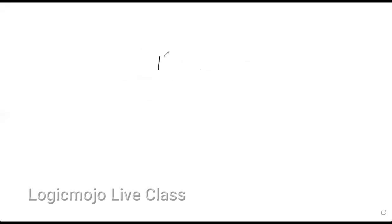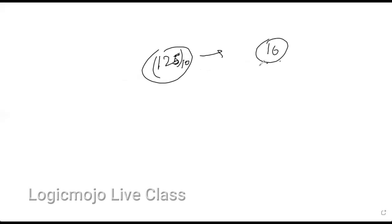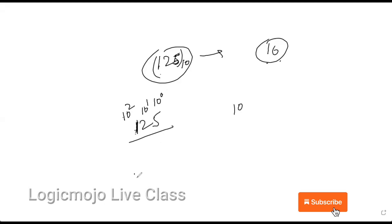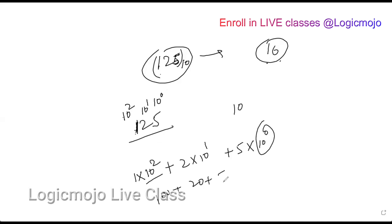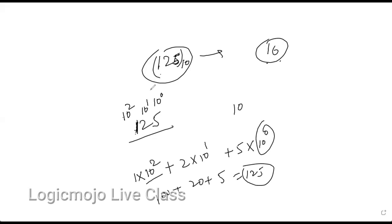There is one more thing: base conversion. If a number is 125 in base 10 and you need to convert it to another base like hexadecimal, here's how. In decimal (base 10), each digit position represents a power of 10: so 125 is 1×10² + 2×10¹ + 5×10⁰ = 100 + 20 + 5. Our default mindset assumes base 10, but there are other bases like binary, octal, and hexadecimal.